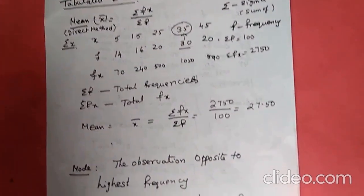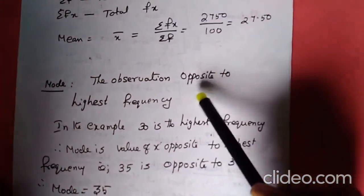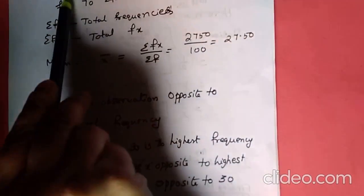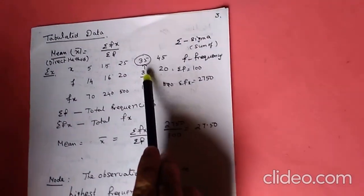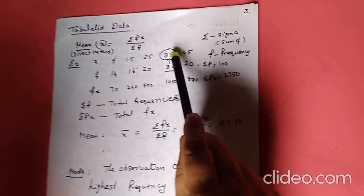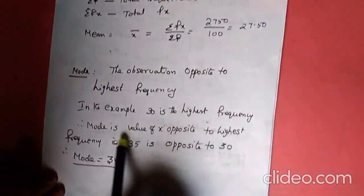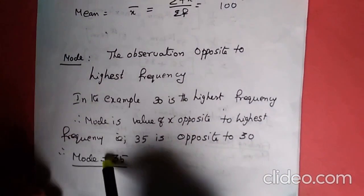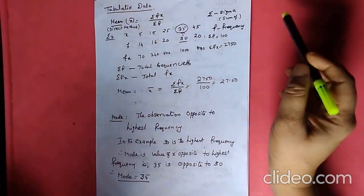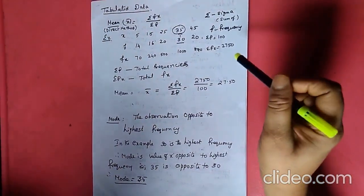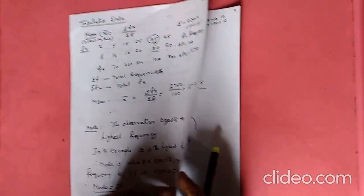Next, come to mode. What is mode? The observation opposite to the highest frequency. In the frequency column, which is the highest frequency? 30 is the highest frequency. Opposite to 30, what is the observation? 35. Therefore, 35 is the mode.